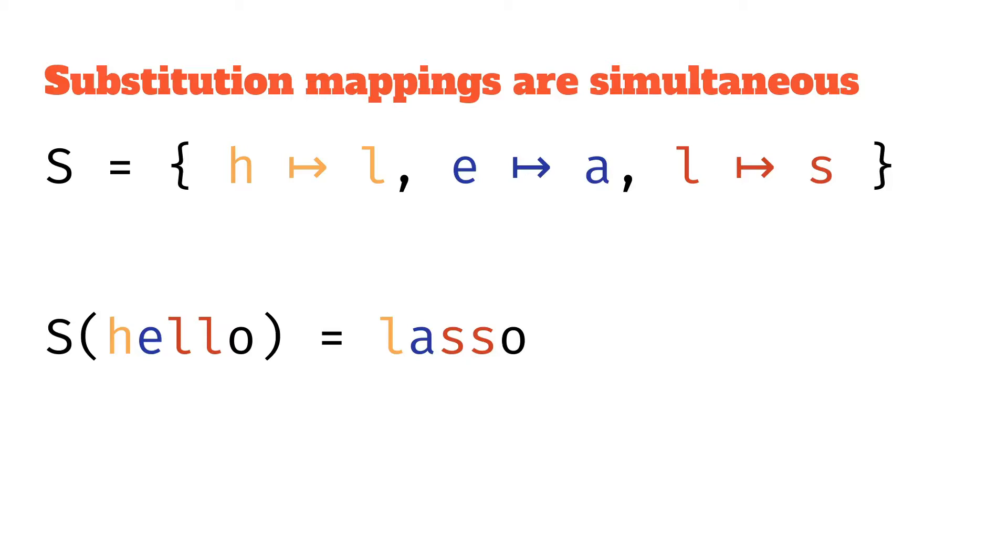You'll notice that while the H goes to L and then L goes to S, we don't do both of these. So the H doesn't go to S, it just goes to L. So we apply all these simultaneously, but effectively it can only ever match one mapping.